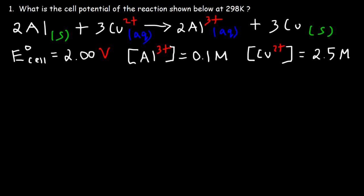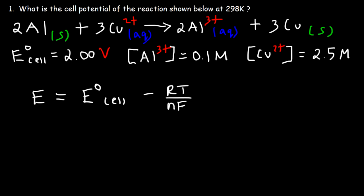In this video, we're going to talk about how to calculate the cell potential using the Nernst equation. There are two equations that you need to be familiar with. The first one: the non-standard cell potential is equal to the standard cell potential minus RT over NF times the natural log of Q.